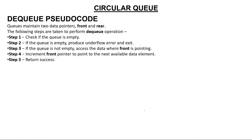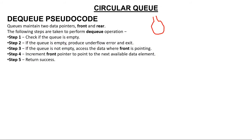Now comes dequeue — to delete an element. It's like a bottle: if someone asks for water but the bottle is empty, you can't give any — that's an underflow. So check if the queue is empty. If the queue is empty, produce an underflow error and exit. If the queue is not empty and there are elements, delete the element from front first, then increment front. In enqueue we incremented rear first then inserted; in dequeue we delete first then increment front.